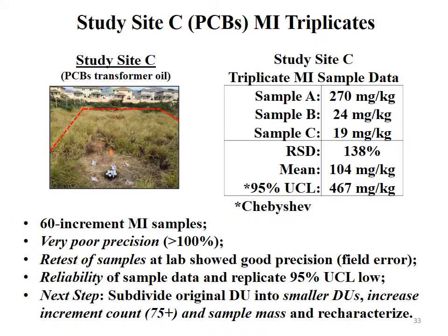Back to study site C, the Voice of America site: in addition to discrete samples, we collected MI triplicates — three independent 360-increment multi-increment samples, each weighing roughly 3–4 kg. Looking at the results: sample C yielded 19 ppm PCBs; sample B yielded 24 ppm PCBs.